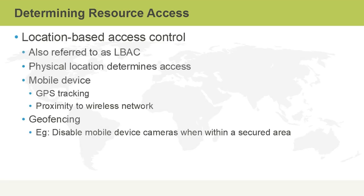Location-based access control can also be referred to as LBAC. This is where the physical location of a user, or more specifically a device that they're using, determines what access they have to resources. In the case of a mobile device, we might use GPS tracking to determine the proximity of the user to a certain location or wireless network. Geofencing, for example, might disable mobile device cameras when the user is within a secured area inside a facility.